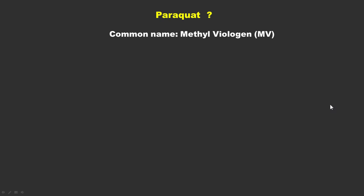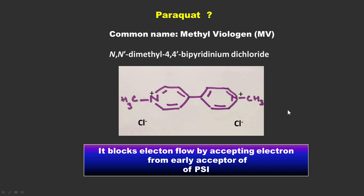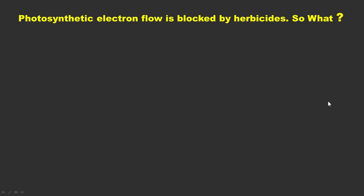Paraquat is also known as methyl viologen. Its chemical name is N,N'-dimethyl-4,4'-bipyridinium dichloride. This is its chemical structure, where you can see the two pyridine rings attached at the 4 and 4' positions. What paraquat does is block electron flow by accepting electrons from early acceptors of Photosystem 1.